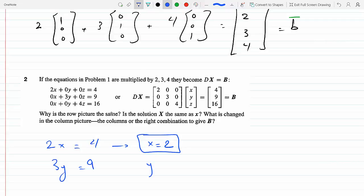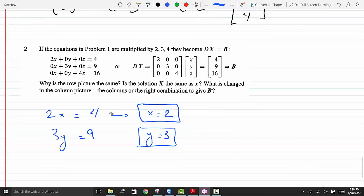And 3y equals 9 gets me y equals 3, and 4z equals 16, so z equals 4. So the equations of the planes remain—these are the same planes we got from problem number one.